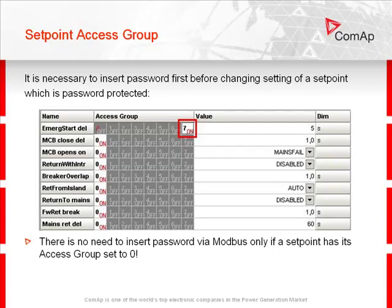I am going to change the setting of the emergency start delay setpoint, which has its access group set to 7. This means only a user with access to that group can edit the setpoint. There is no need to insert a password via Modbus if a setpoint has its access group set to 0. All setpoints shown can be set without a password, except the emergency start delay setpoint.